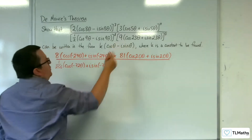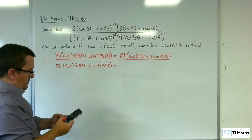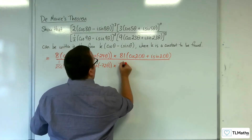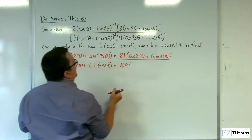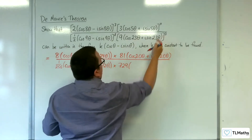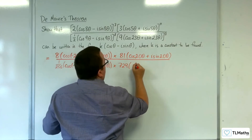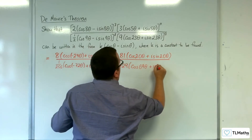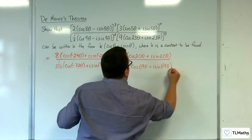Then we've got 9 cubed, so 729. Then we've got 23 times 3, so 69. So cosine of 69 theta plus i sine 69 theta.